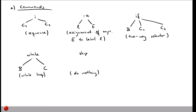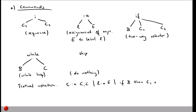Instead of drawing syntax trees, I can use a more compact textual notation. In this notation, a command consists of: a command followed by a semicolon and another command (sequence); a label assigned the value of an expression (assignment); an if statement with a boolean expression, a then branch executing c1, and an else branch executing c2; a while loop with a boolean expression and a body command c; or simply a skip command.